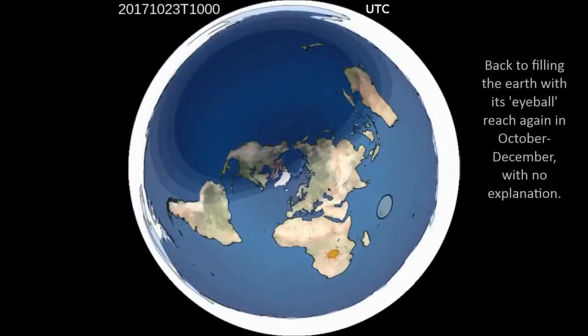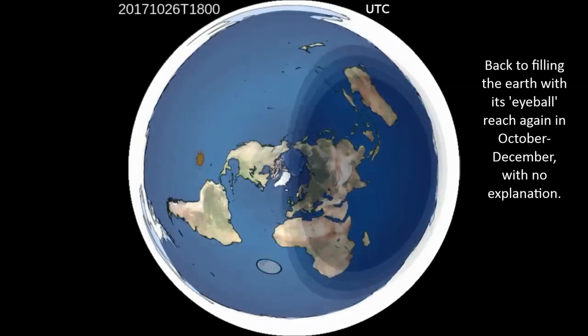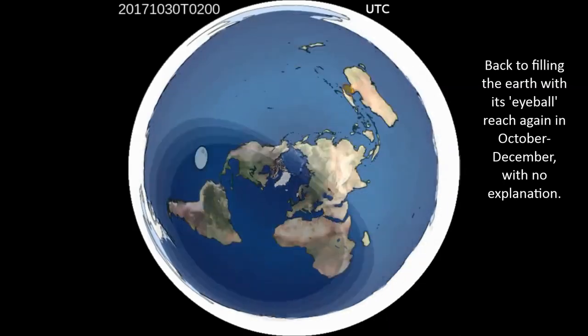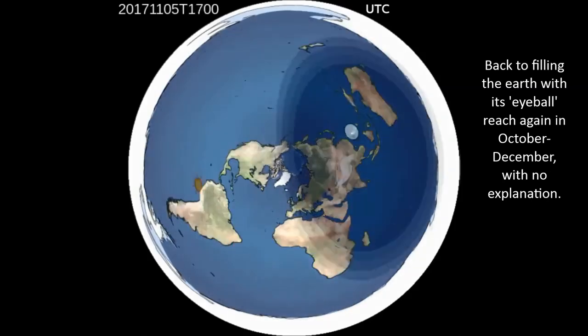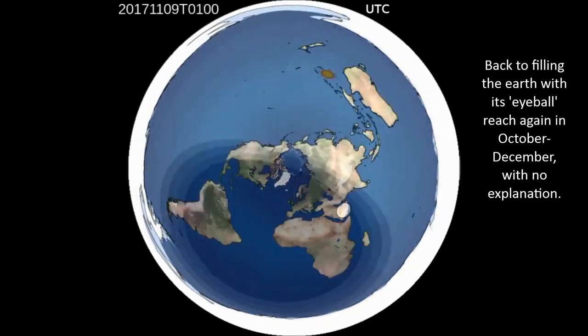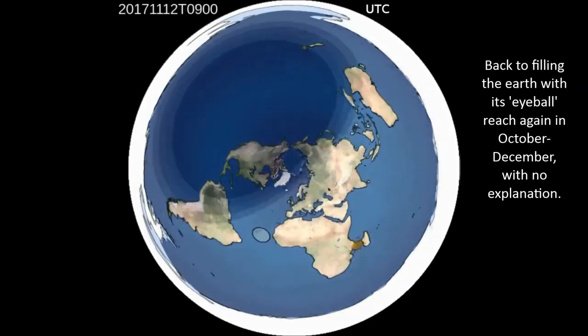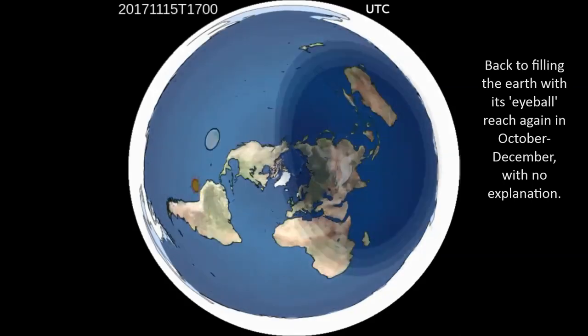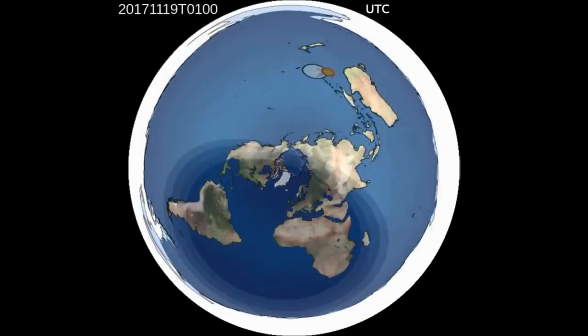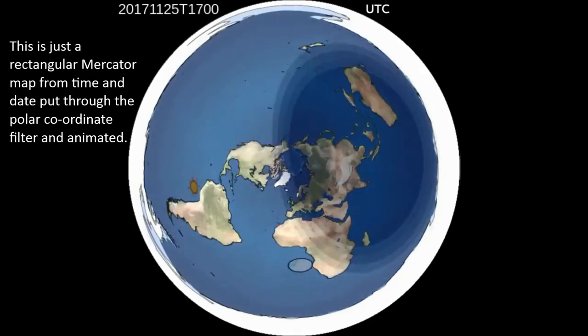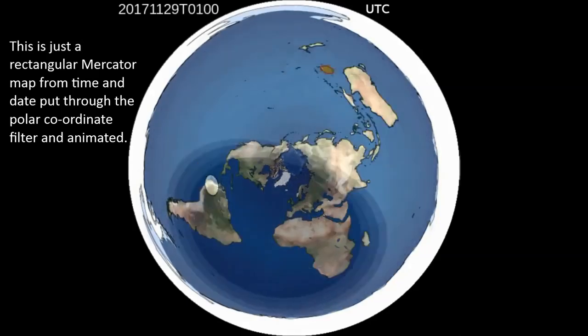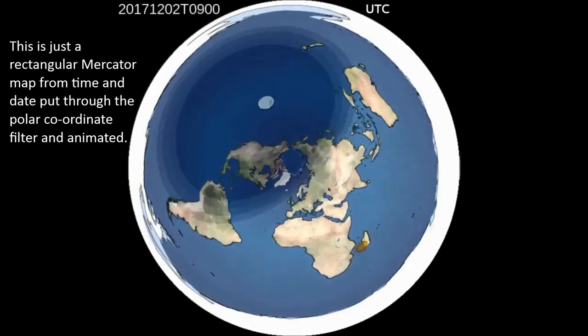It is now giving plenty of sunshine to south and obviously the Antarctic 24-hour daylight. And it's all to do with simply the way they've created this animation. It's the rectangular Mercator map. You can see it's the same graphics from timeanddate.com. And they put it through a polar coordinate filter and sequenced it so it's animated. And that will satisfy some people. They'll say, ah, well, that's how it works. Watch that.